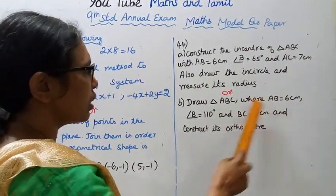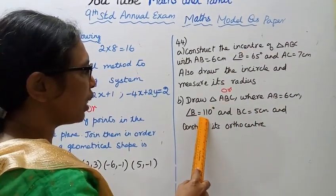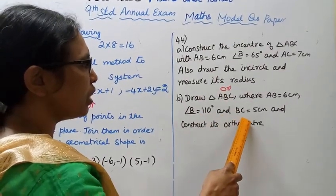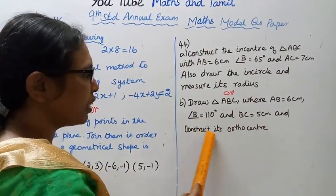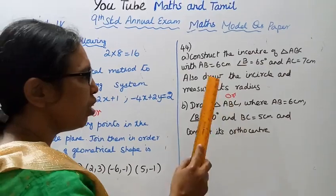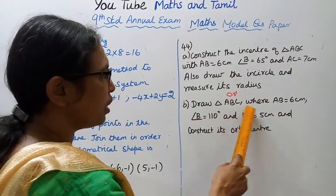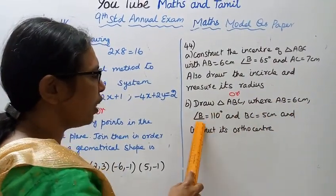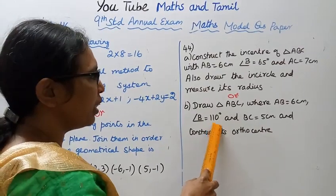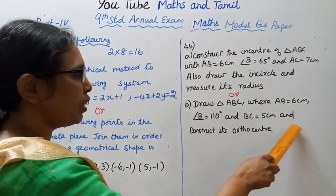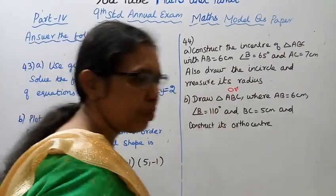Draw triangle ABC where AB equal to 6 centimeter, angle B equal to 110 degrees, and BC equal to 5 centimeter, and construct its orthocenter. Draw triangle and construct its orthocenter. Draw triangle ABC where AB equal to 6 centimeter, angle B equal to 110 degrees, and BC equal to 5 centimeter, and construct its orthocenter.